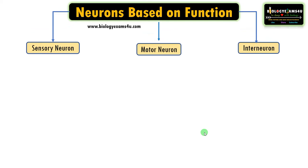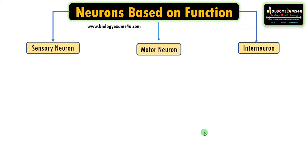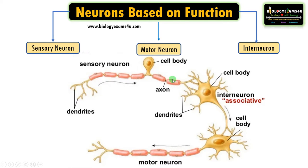Neurons are classified into sensory neurons, motor neurons, and interneurons. A sensory neuron receives signals from sensory receptors like skin receptors. This information is then passed on to the interneuron, which acts as a middleman between the sensory neuron and the motor neuron. Motor neurons are involved in regulating body movements.